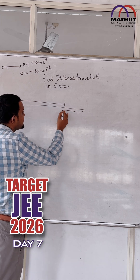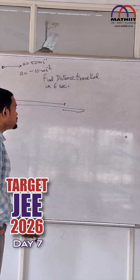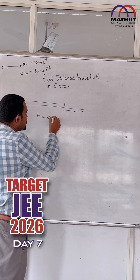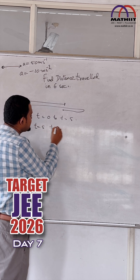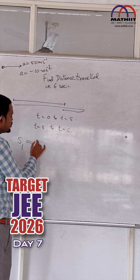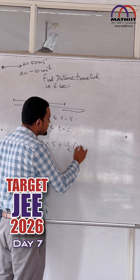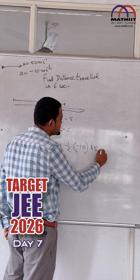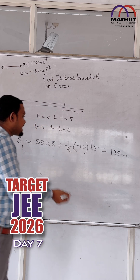Instead, you want the total distance traveled along the entire path. So for that, you have to split the motion into two parts: from t equal to 0 to t equal to 5, and from t equal to 5 to t equal to 6. For the first part, s1 equals 50 into 5 plus half into minus 10 into 5 squared, which equals 125 meters.